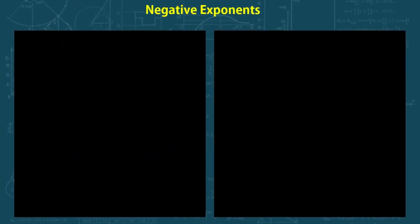Negative exponents. A negative exponent is just a simple way of showing a fraction with a power. For example, if I had a fraction 1 over 10 to the power of 5, a simple way of writing this is just 10 to the power of negative 5.